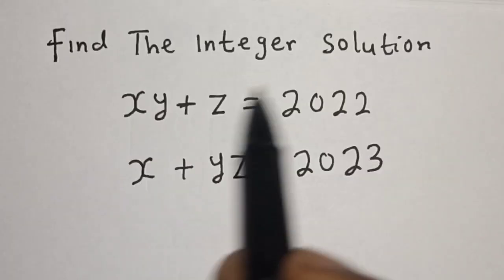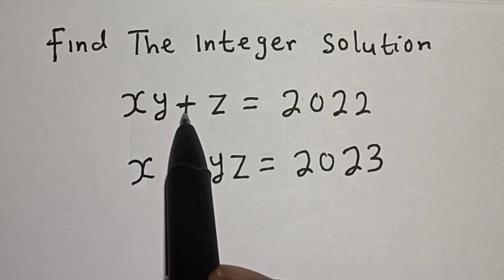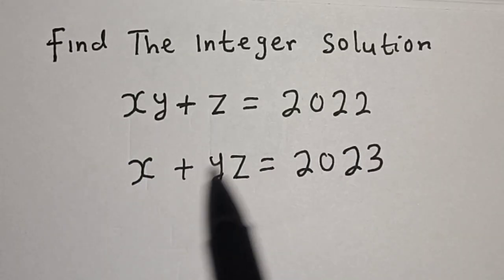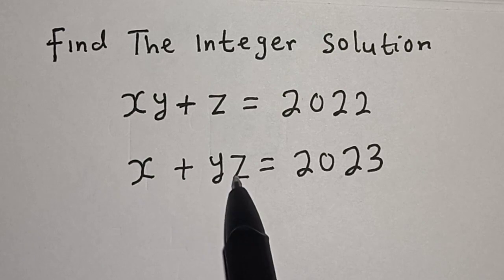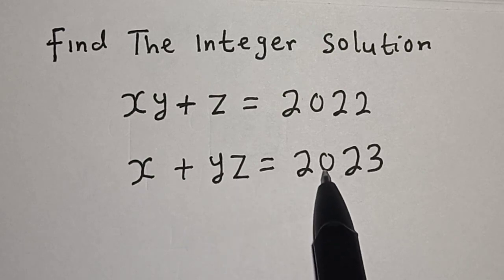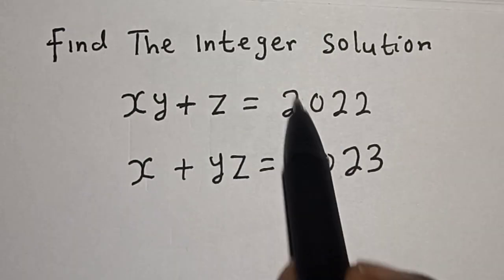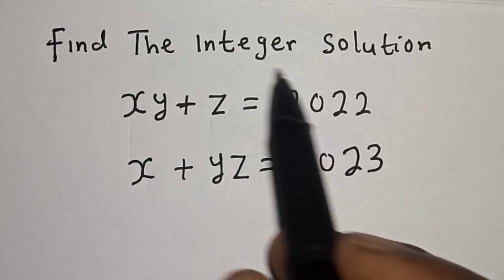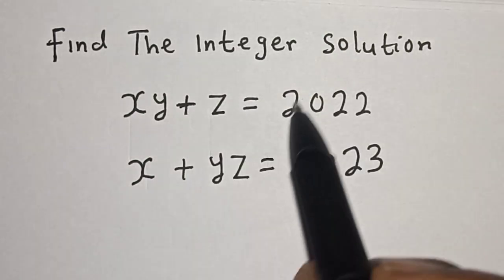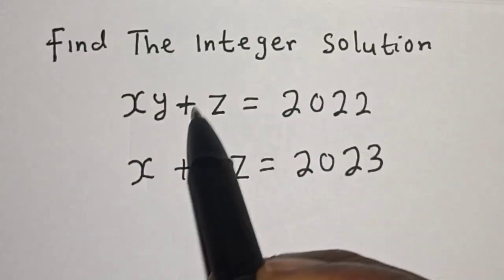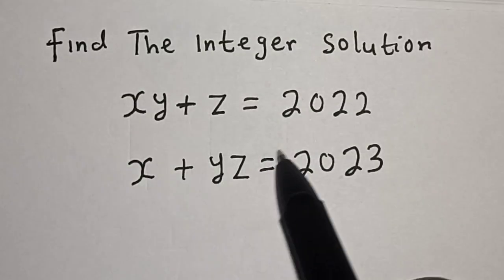In the integer solution, x·y + z is equal to 2022, x + y·z is equal to 2023. Hi everyone, welcome to my class. In this class we quickly want to find the integer solution from this system of equations.